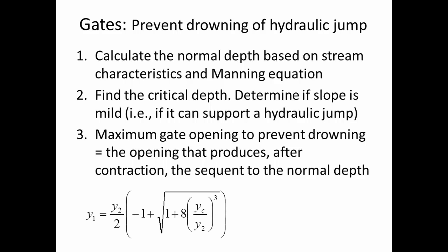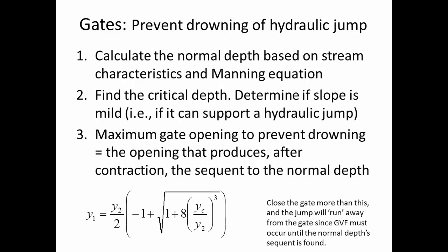The next part is finding the maximum gate opening. That's the opening equal to the sequent of the normal depth. If it's open any wider than that, the hydraulic jump will approach the gate and the jump will drown the gate. If it opens smaller than that, the jump will run away from the gate. This maximum gate opening that prevents drowning corresponds to the ideal hydraulic jump, where the hydraulic jump capacity curve sits right on top of the tailwater capacity curve.